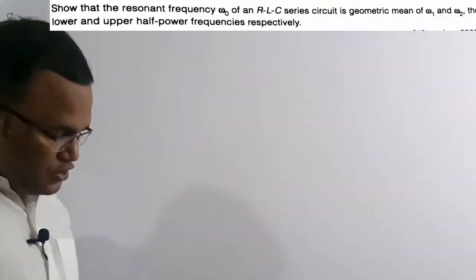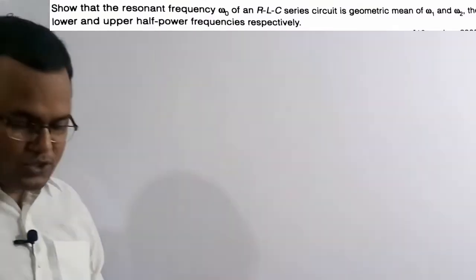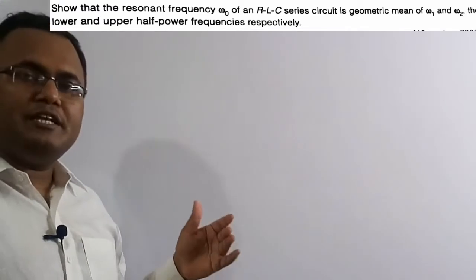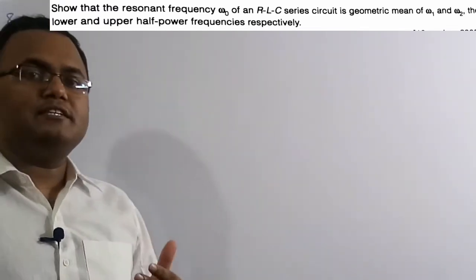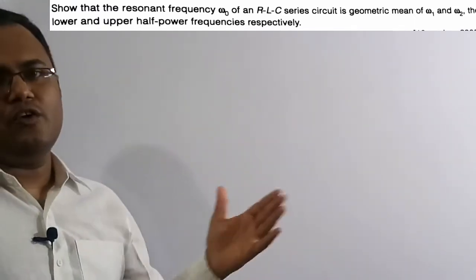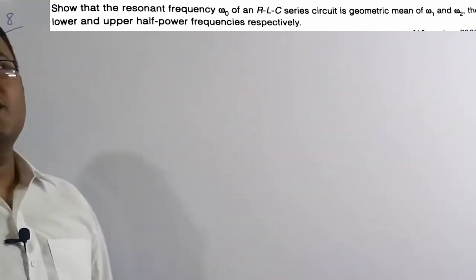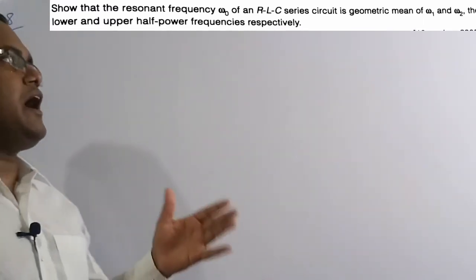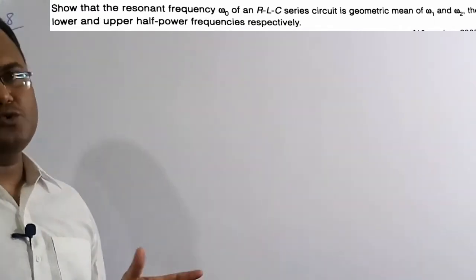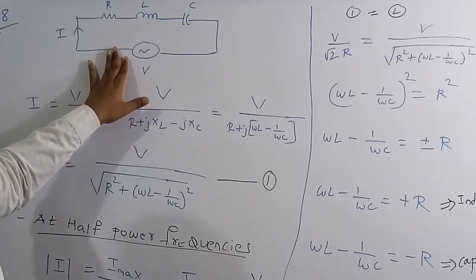Now the eighth question: show that the resonant frequency ω₀ of an RLC series circuit is the geometric mean of ω₁ and ω₂, the lower and upper half-power frequencies respectively. We need to prove ω₀ = √(ω₁·ω₂). This question is from IES Mains 2005 for 10 marks.